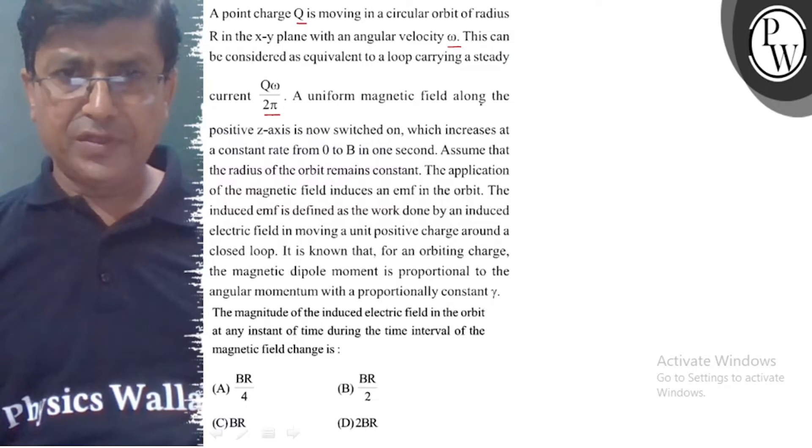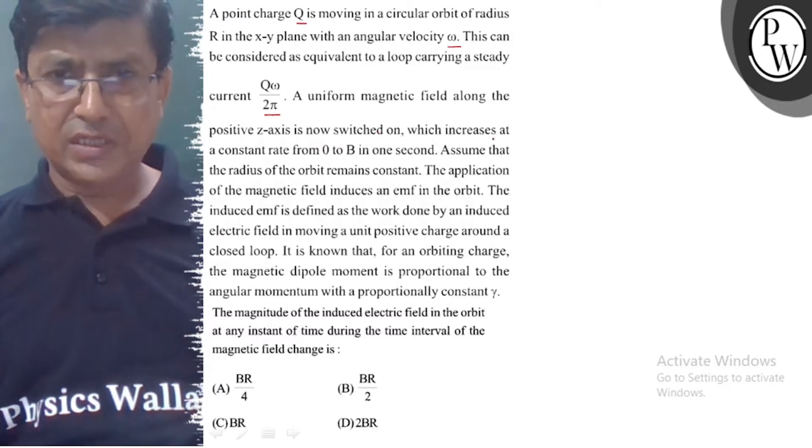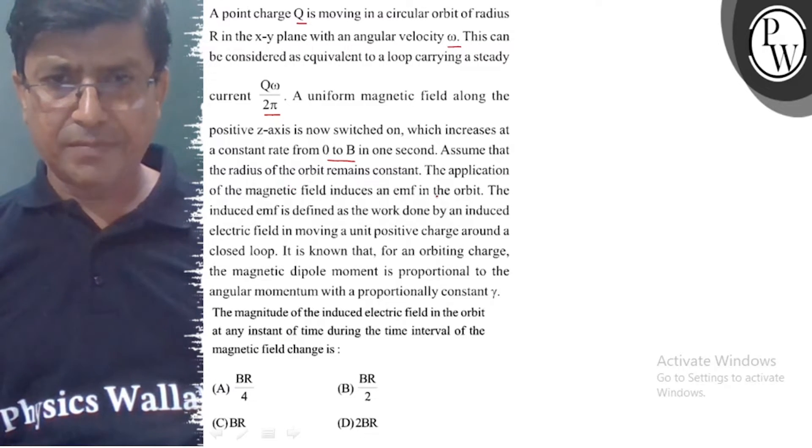A uniform magnetic field along the positive z-axis is now switched on, which increases at a constant rate from 0 to B in one second. Assume that the radius of the orbit remains constant. The application of the magnetic field induces an EMF in the orbit.